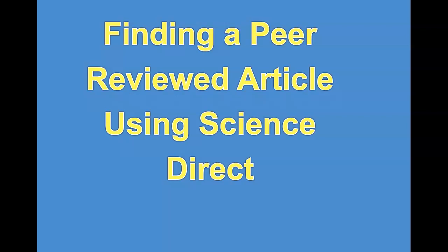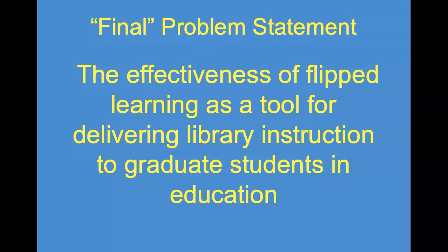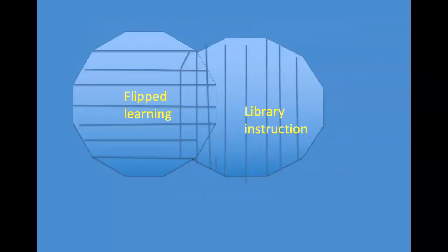I have now read the articles I found in my search of the EBSCO databases and I have come up with an intervention I'd like to research. I am ready to start developing my final problem statement — I say final in quotes because I may still tweak it as I continue to do research. I am now looking for articles that talk about using the flipped classroom model as a means of delivering library instruction. Flipped learning is when students watch lectures at home and then spend class time applying what was taught in the video lectures. I will make a set of all the articles in flipped learning, flipped instruction, or flipped classrooms, and a set of all the articles on library instruction or information literacy, and then ask the database to give me those articles that talk about both concepts at the same time.